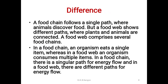Difference between food chain and food web: a food chain follows a single path where animals find their food, but a food web shows different paths where plants and animals are connected. A food web comprises several food chains. In a food chain, an organism eats a single item, whereas in a food web, an organism consumes multiple items. In a food chain there is a singular path for energy flow, while in a food web there are different paths of energy flow.